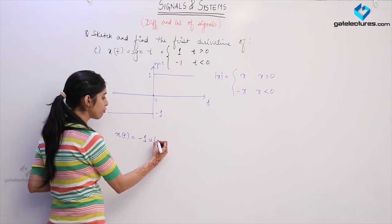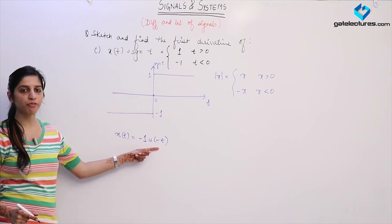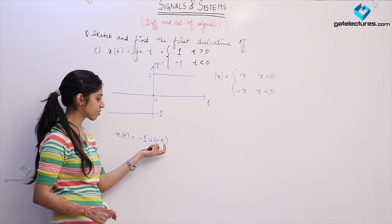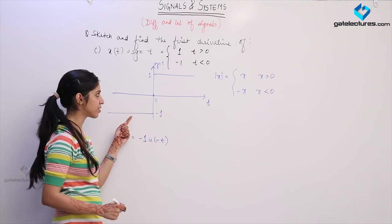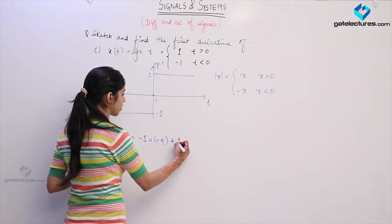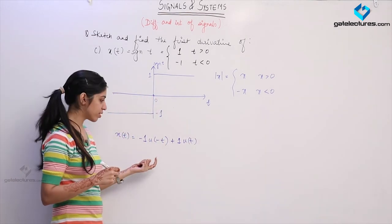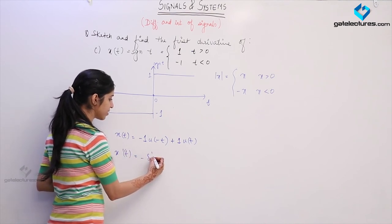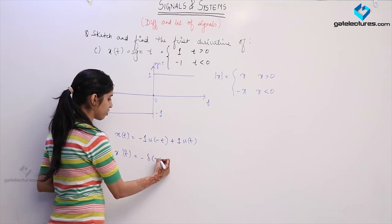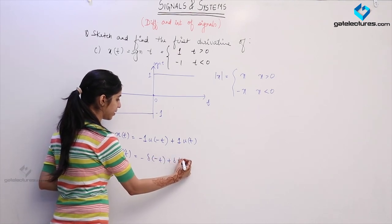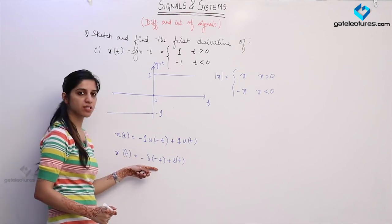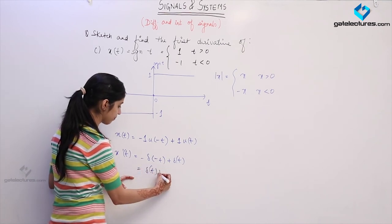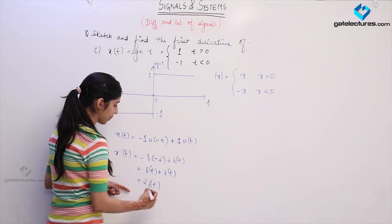Representing the signum function as a sum of steps: this consists of a step of minus 1 for all negative values, which can be written as minus 1 times u(minus t), since it is a flipped unit step function. Plus a normal step u(t) of size 1. Differentiating: we get minus delta(minus t) plus delta(t). We know that delta(minus t) equals delta(t), so the minus sign gives delta(t) plus delta(t), which makes it 2·delta(t).